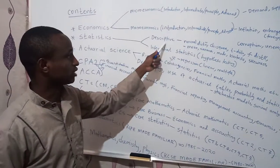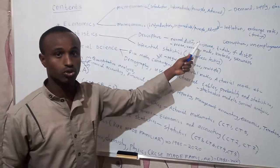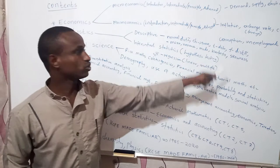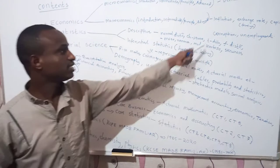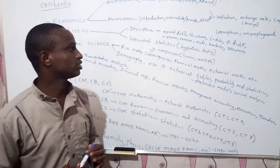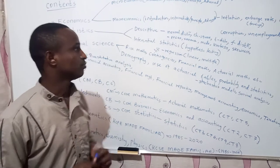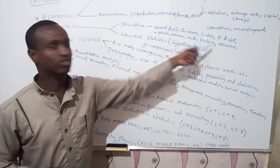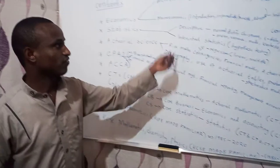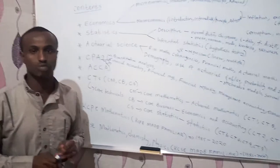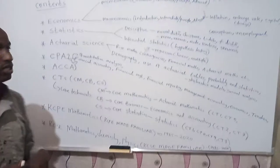In descriptive statistics, I'm going to deal with the normal distribution, the chi-square test using the contingency table, the t-distribution, and the F-distribution — F stands for features distribution, t stands for student distribution. We'll cover the calculation of the mean, mode, and median, variance, standard deviation, kurtosis, and skewness — the third and fourth moments respectively. The first moment gives you the mean, the second moment gives you the variance, the third moment gives you the kurtosis, and the fourth moment gives you the skewness.